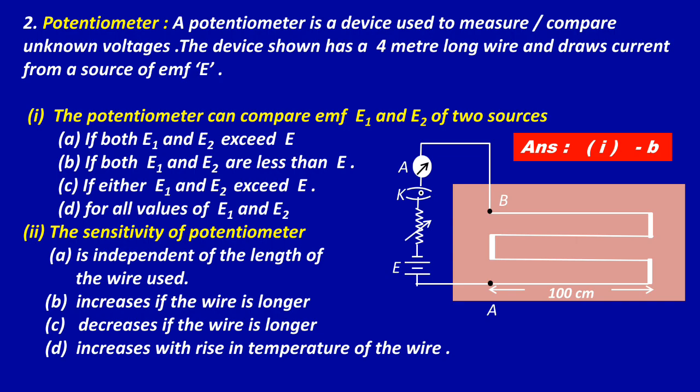Question 2: The sensitivity of potentiometer — Option A: is independent of the length of the wire used, Option B: increases if the wire is longer, Option C: decreases if the wire is longer, Option D: increases with rise in temperature of the wire. The correct answer is Option B — increases if the wire is longer.